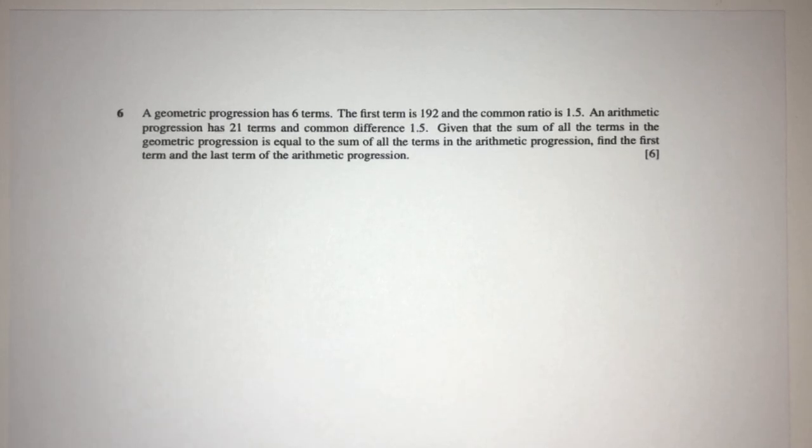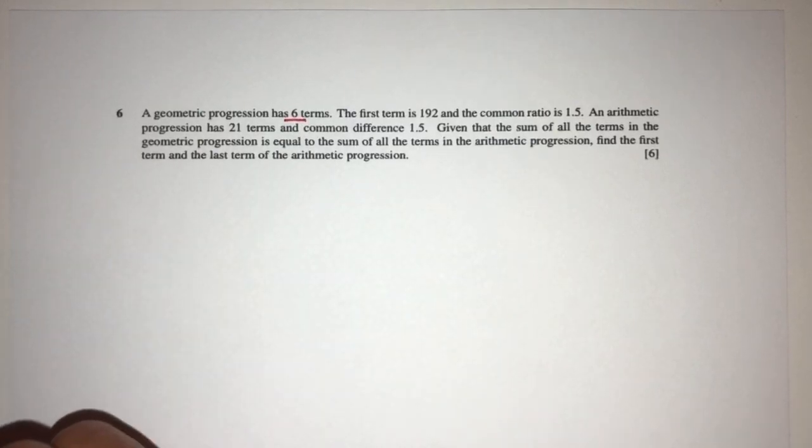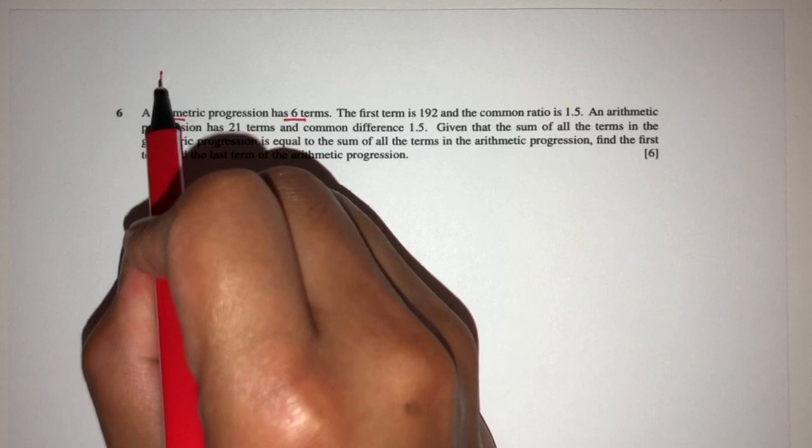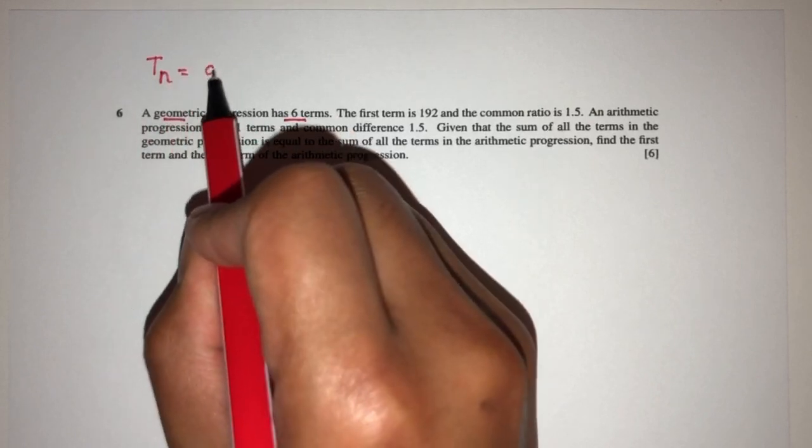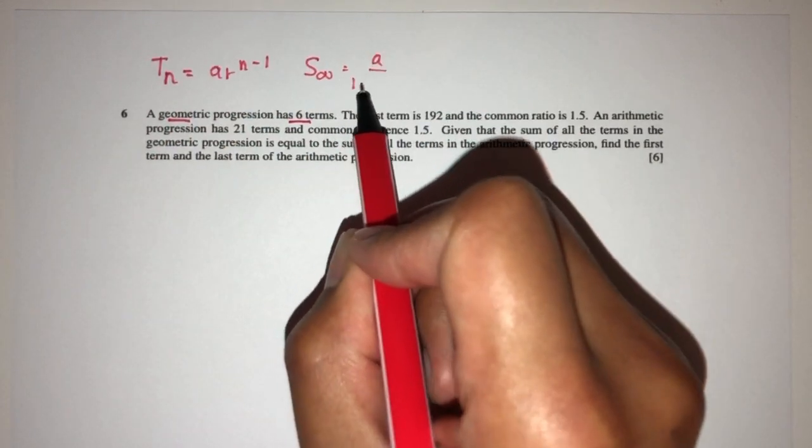Now, for part 6, a geometric progression has 6 terms. So the number of terms is 6. We have a geometric progression, so we know the nth term, for example, is going to be a times r to the power n minus 1, and the sum to infinity is a over 1 minus r.